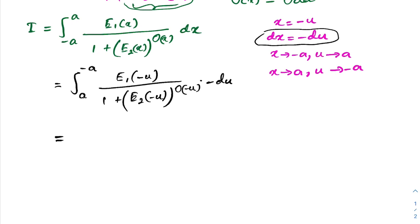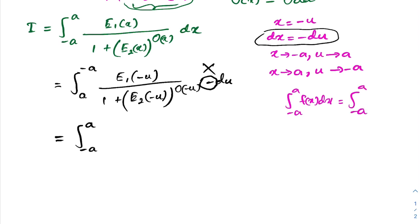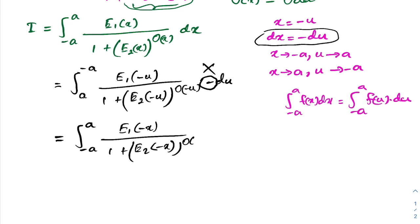We interchange the boundary from a to -a to -a to a, which cancels the minus sign. Since the definite integral is independent of the variable name, we apply the identity: the integral from -a to a of f(x) dx equals the integral from -a to a of f(u) du. So we rewrite the integrand with x, giving e1(-x) over 1 plus e2(-x) raised to the o(-x), dx.